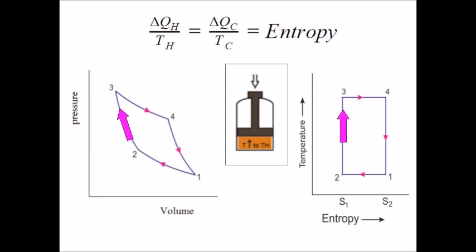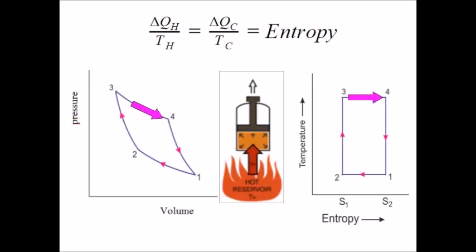Next, isothermal expansion. Heat is added, volume increases, entropy increases. Also, looking at the equation, T is higher, so that means if the entropy's balanced, that QH must be bigger, which is what we already knew.